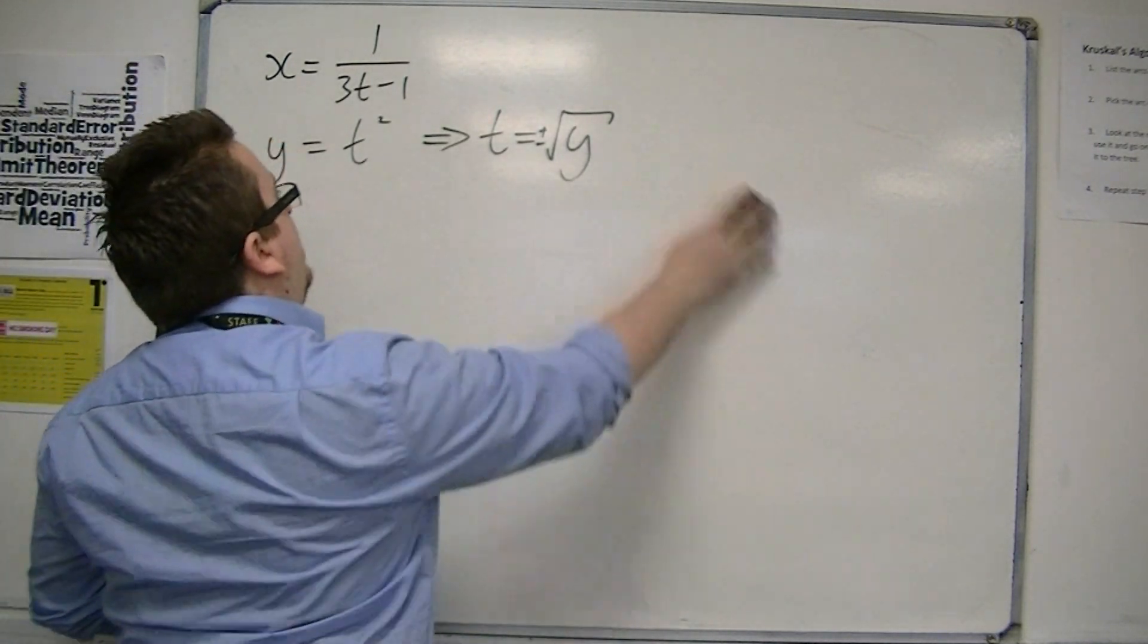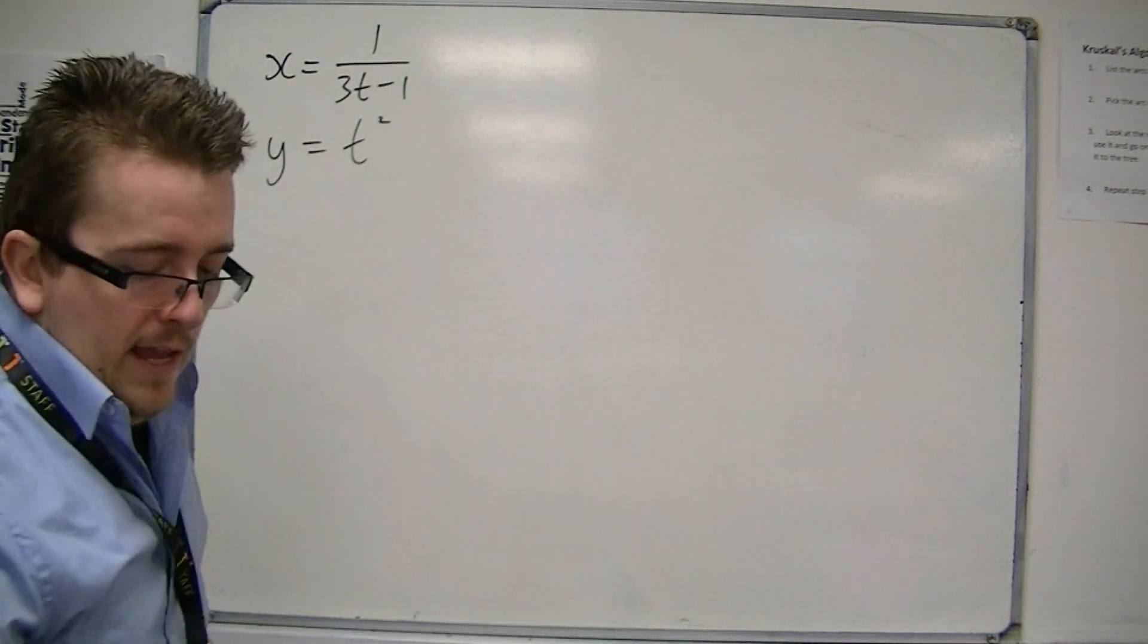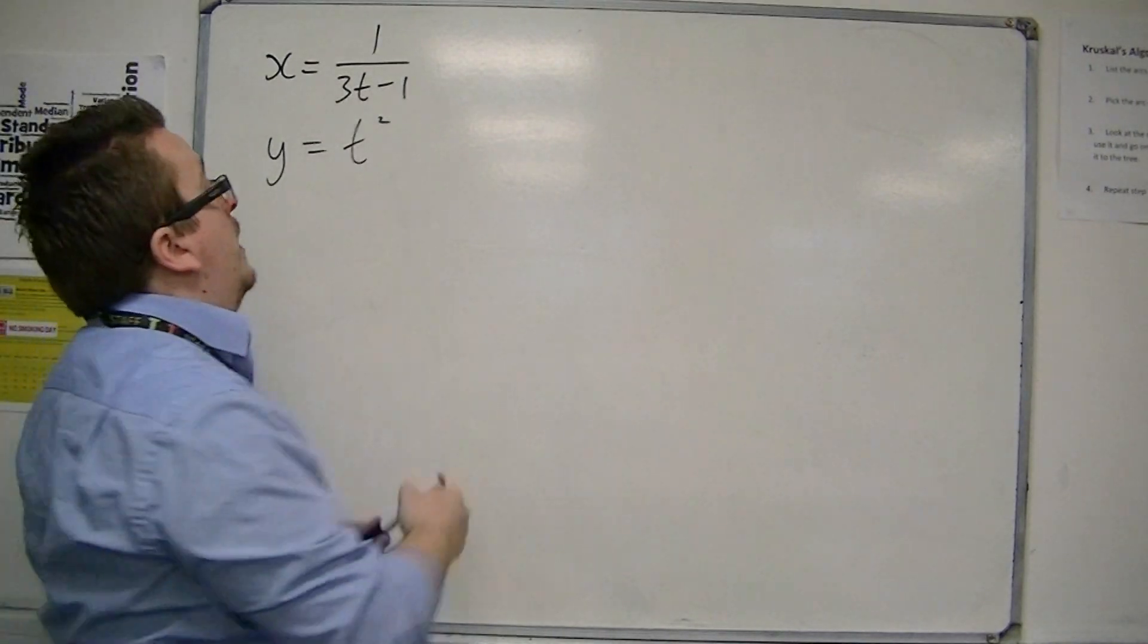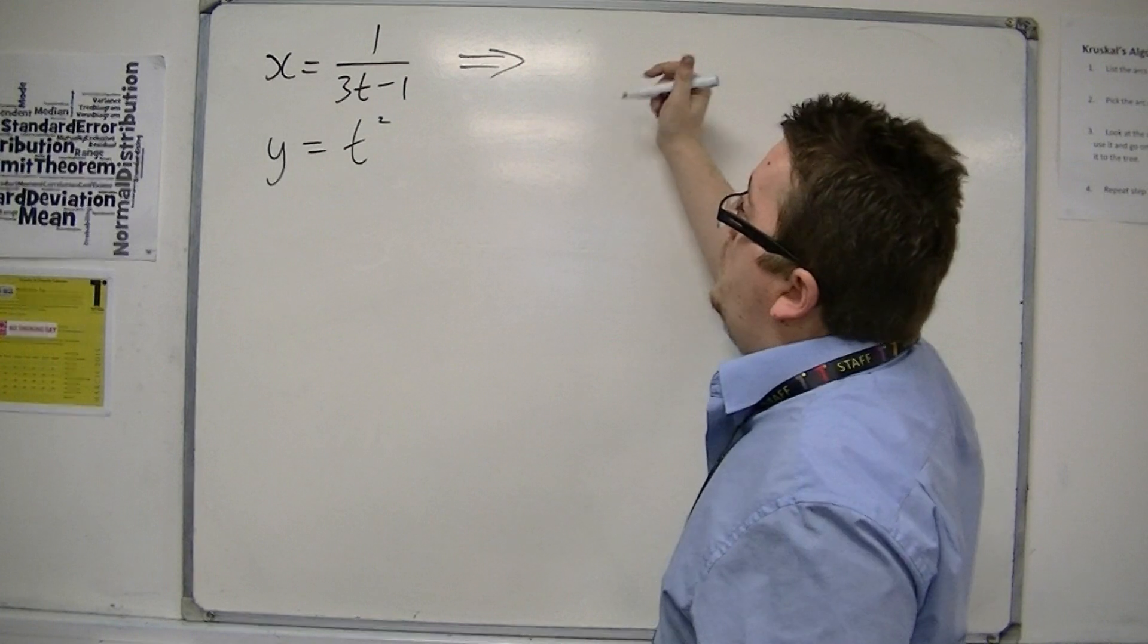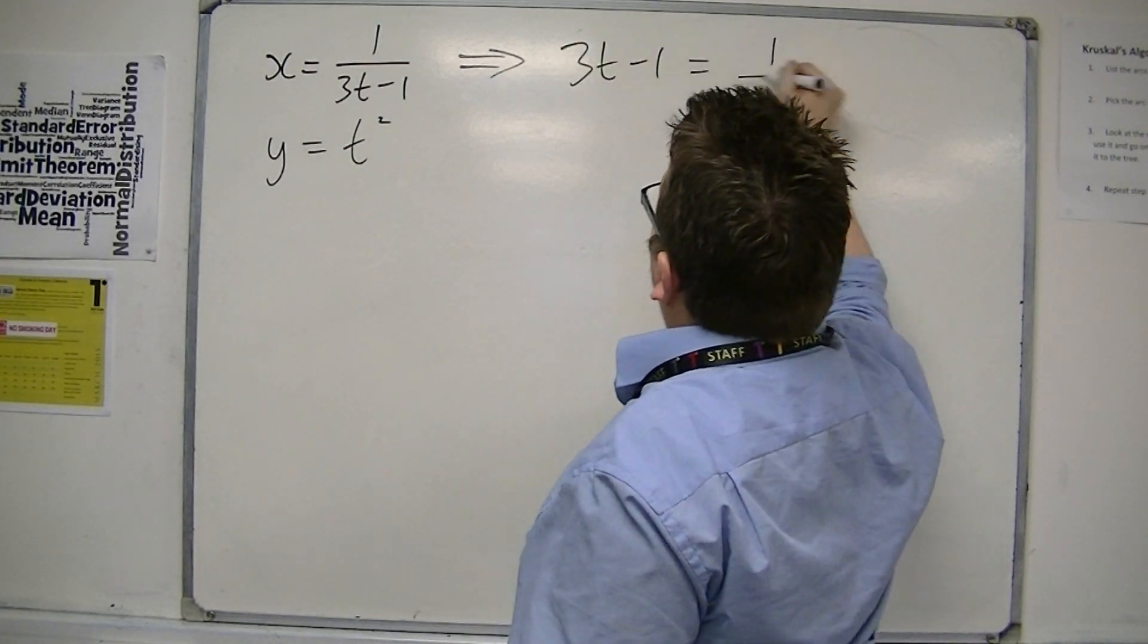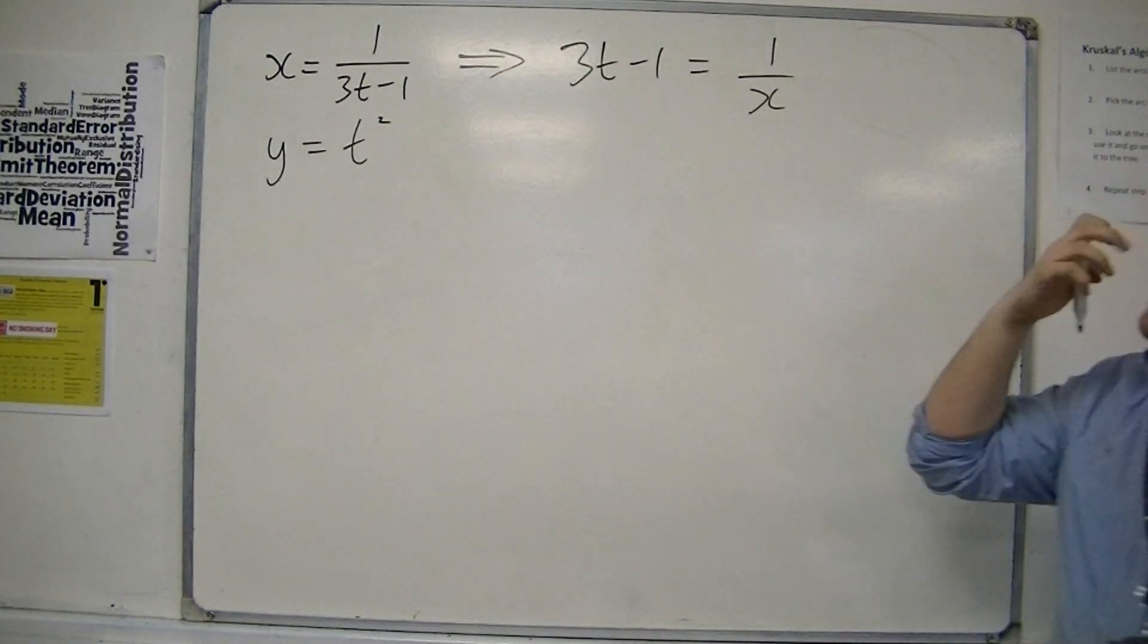So instead of doing that, if I rearrange the first equation, I'm going to multiply both sides by 3t minus 1, divide both sides by x, I can rearrange it to get that.